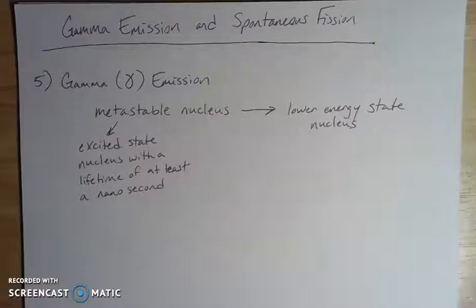I'm rounding out a series of three videos on the various spontaneous nuclear decay processes. I've talked about alpha and beta in the first video, positron emission and electron capture in the second video. And then in this third one, I want to talk a little bit about gamma emission and spontaneous fission.